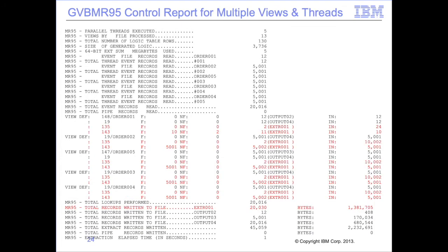In this execution, additional views reading the same input event files but which produce format phase views have been included. The rows shown in red are added to the prior control report as additional outputs from the single scan of the input event files. This also demonstrates how the standard extract files can be shared across multiple threads.